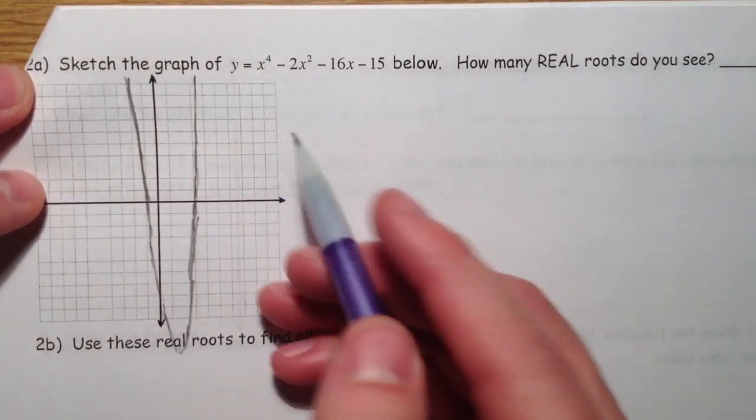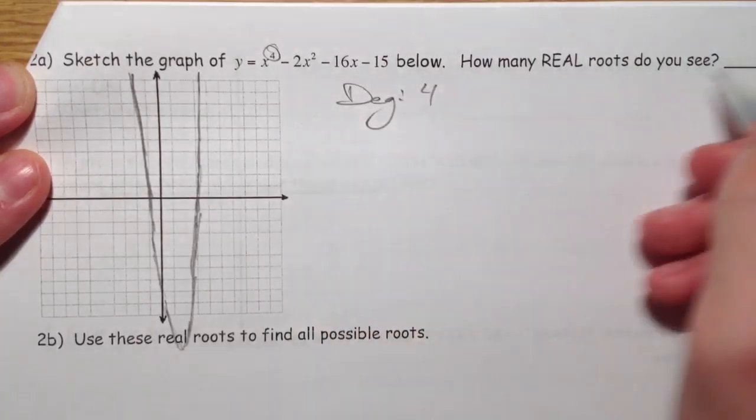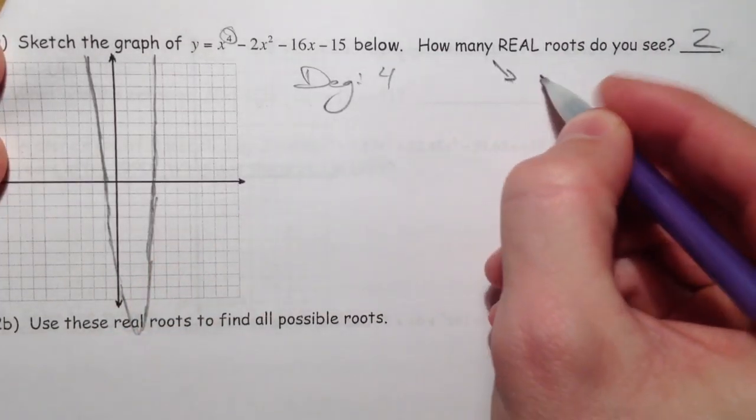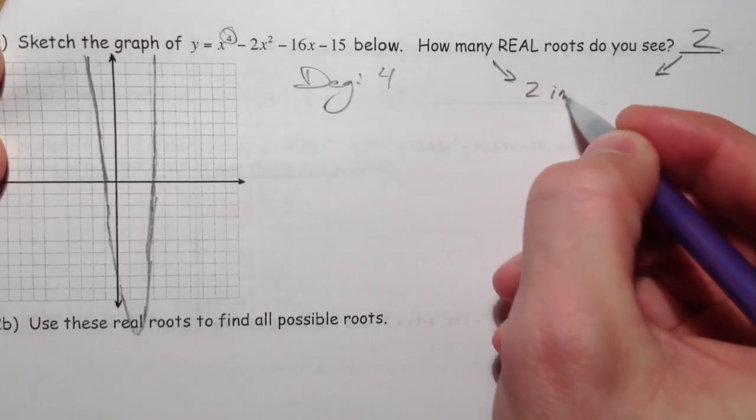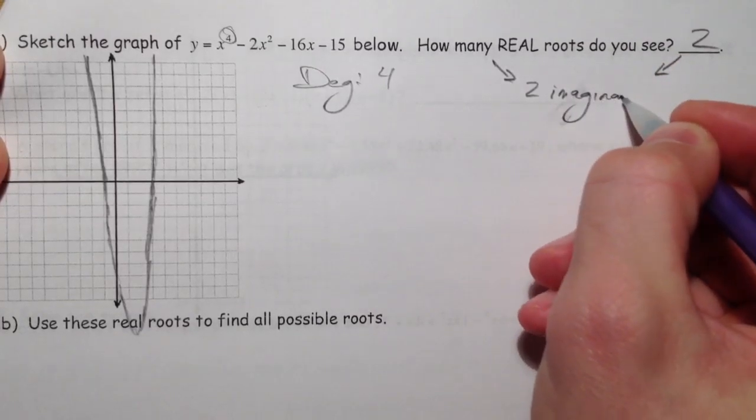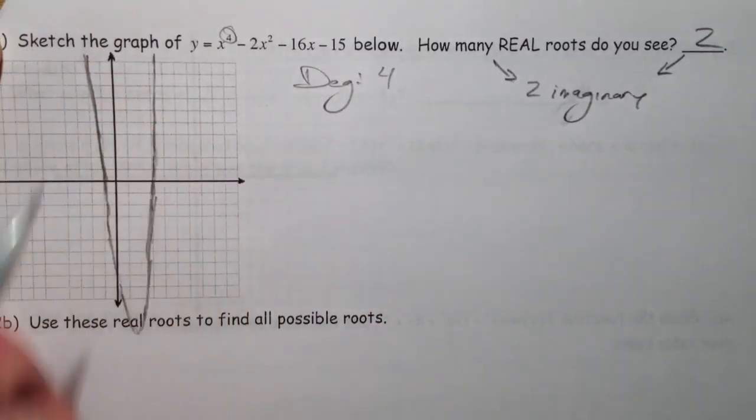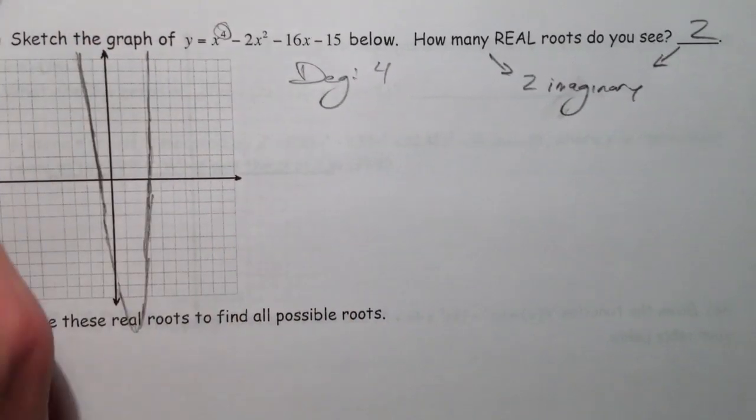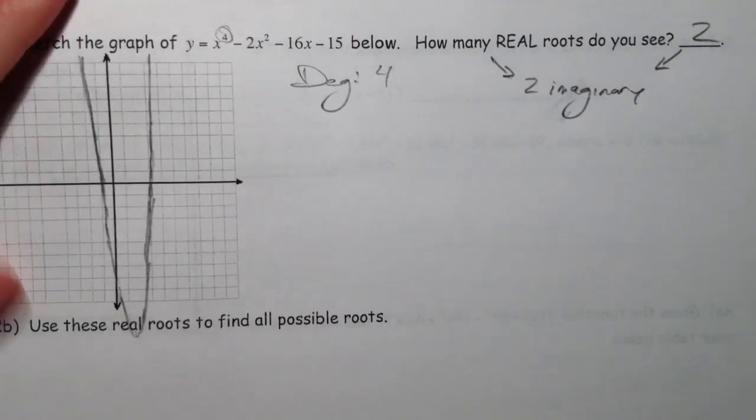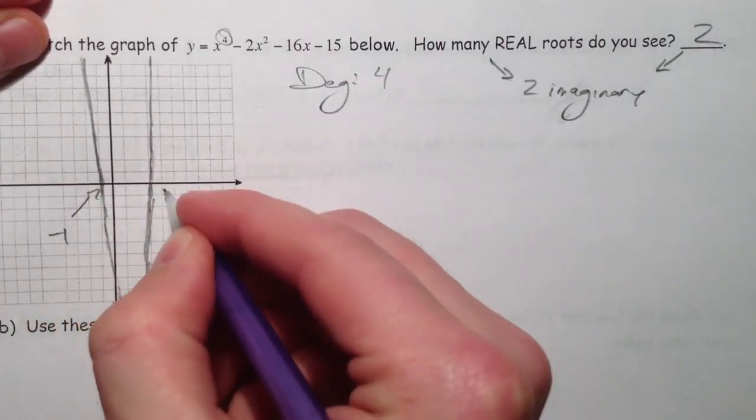Our next one, x to the fourth. So, degree 4. We see two real roots. It crosses twice. So, that must mean two imaginary roots. Because, and now, this isn't always the case, except if it crossed again either way, it might cross over here and then go back up. But, you never know. But, it's probably going to be two imaginary. Unless we change our window to be doubly sure. So, our zeros look like negative 1 and 3.